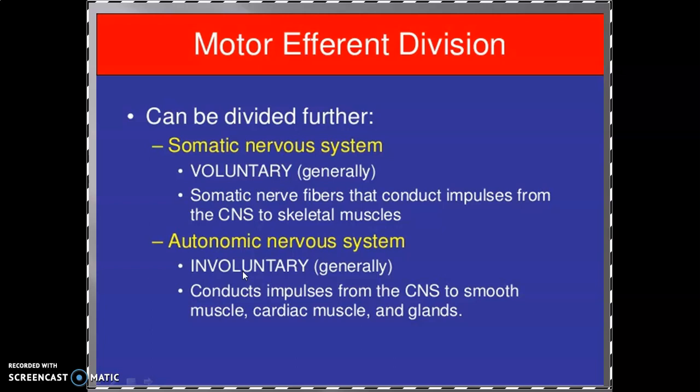The autonomic nervous system functions in involuntary functions. Its function includes conduction of impulses from the central nervous system towards the smooth muscles, cardiac muscles, and different exocrine or endocrine glands. This is the autonomic nervous function.